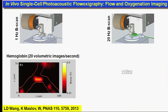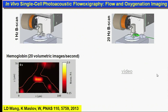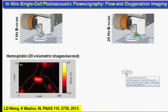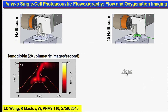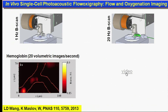We've advanced oximetry to the ultimate single-cell resolution. Here's a demonstration at 1 Hz and 20 Hz B-scan rates. At 200 Hz, single red blood cells are imaged in vivo in real time.